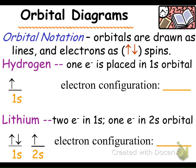Orbital notations, or orbital diagrams, are drawn as lines representing orbitals and up/down arrows representing electrons. When drawing orbital notations in class, we always draw the orbital notation and write the electron configuration as well. For hydrogen, the electron configuration is 1s1, so we draw one dash for the s orbital — since there's only one shape — and one up arrow representing that single electron.